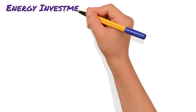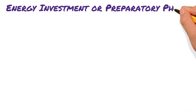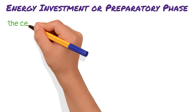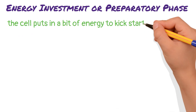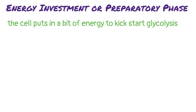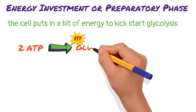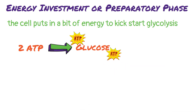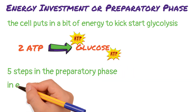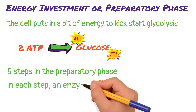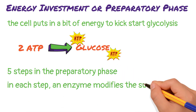The first phase is the energy investment phase, or preparatory phase. This is where the cell puts in a bit of energy to kickstart glycolysis. In this phase, two ATP molecules are used to activate glucose. There are five steps in the preparatory phase, and in each step an enzyme modifies the sugar molecule.